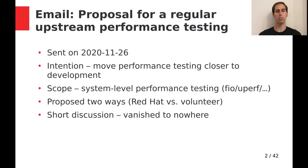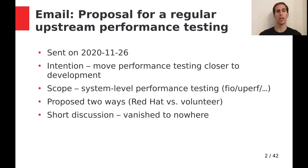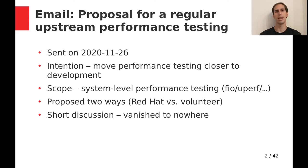I sent this email proposal for regular upstream performance testing more than half a year ago. The motivation, in short, is that although developers occasionally check commits they consider important for performance regressions, and we do some regular performance CI, we still hit some issues only late during pre-release performance testing, and it's already too late to discover what caused the change.